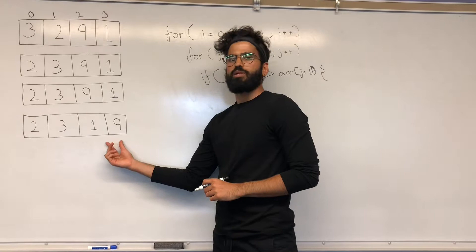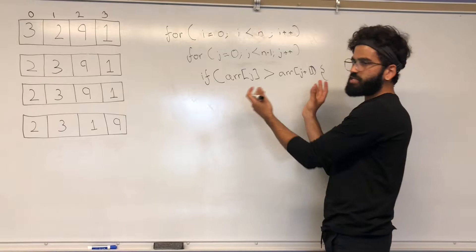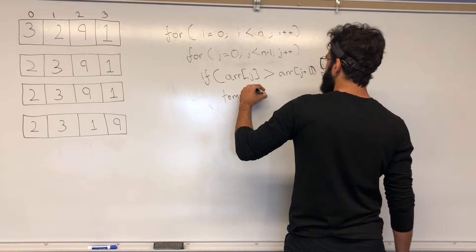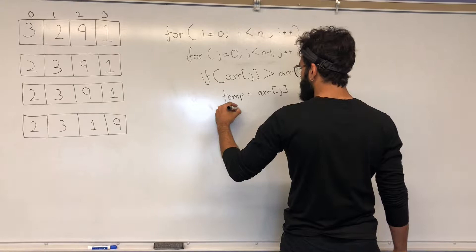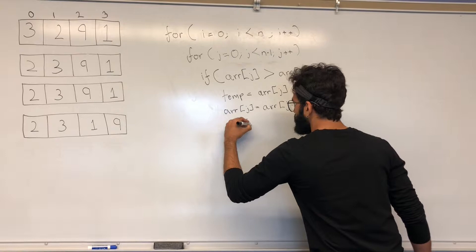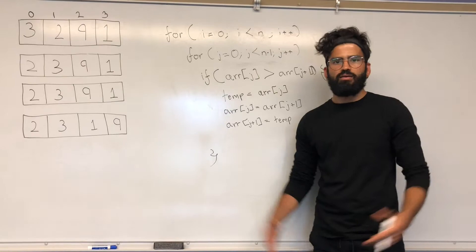If array[j] is greater than array[j+1], they're not in the right order for descending sort, so we swap them. Swapping is straightforward: assign a temp variable the value at position j, then reassign array[j] to array[j+1], and finally set array[j+1] to the temp variable. And this is it — bubble sort is solved. These nested loops with the if statement will sort the array for us.